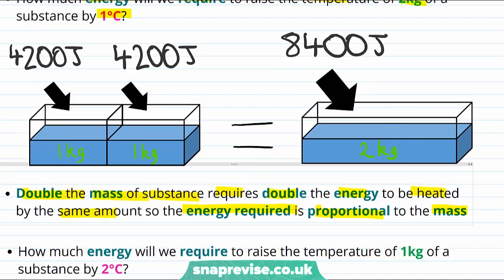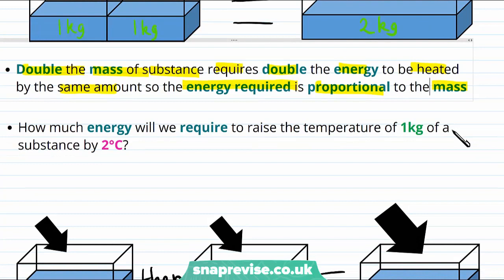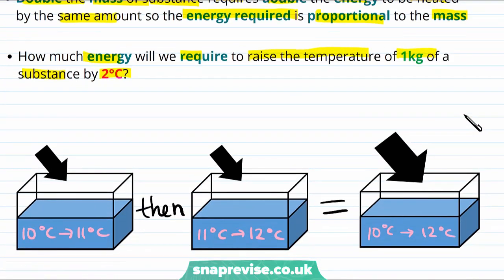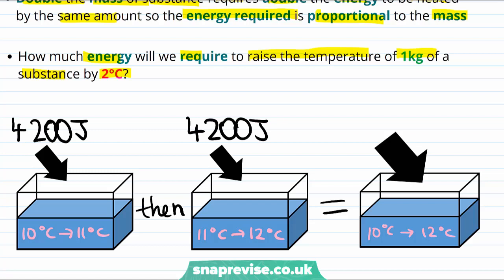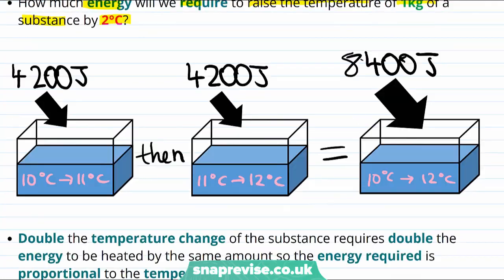How does the energy required depend on the temperature change we want to achieve? For example, to raise one kilogram of water from 10 to 12 degrees centigrade, we can go from 10 to 11 degrees and then 11 to 12 degrees, each step taking 4200 joules — so 8400 joules in total. Doubling the temperature change doubles the energy required. Therefore, the energy required is proportional to the temperature change.